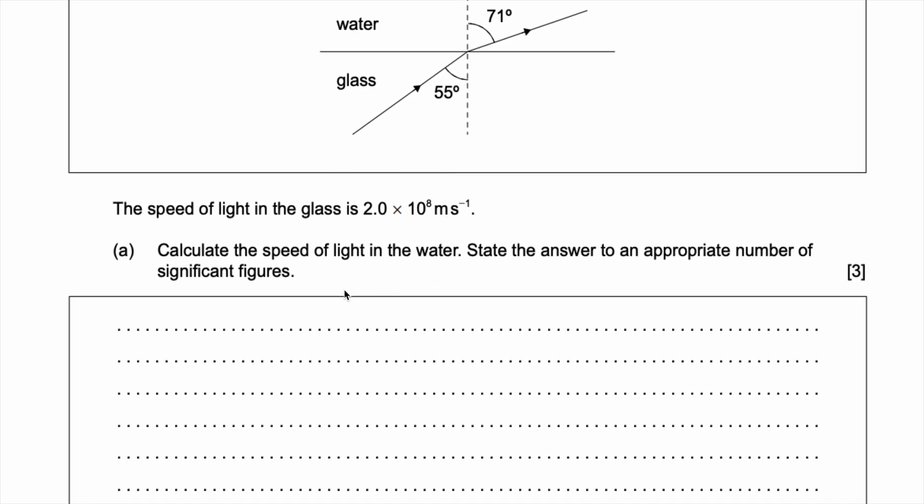Okay, how do we do this first question? Well in your formula booklet you have two equations which are going to be useful for this question. First one is n1 v1 is equal to n2 v2 and the second one is n1 sin theta 1 is equal to n2 sin theta 2. These both are given in your data booklets. These are just ratios essentially.